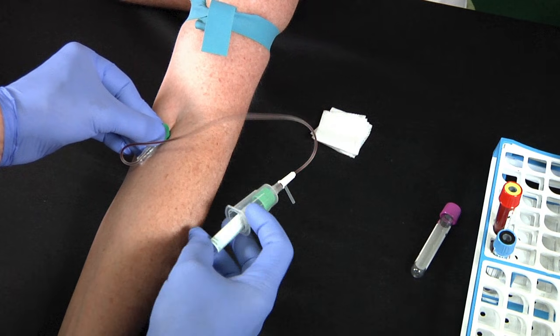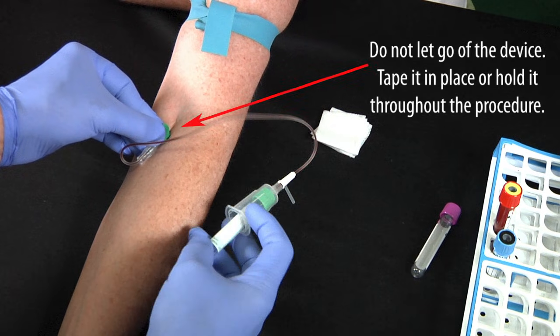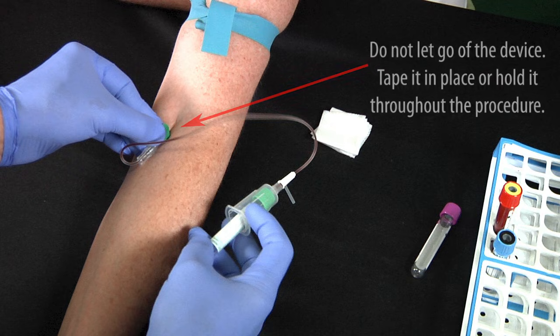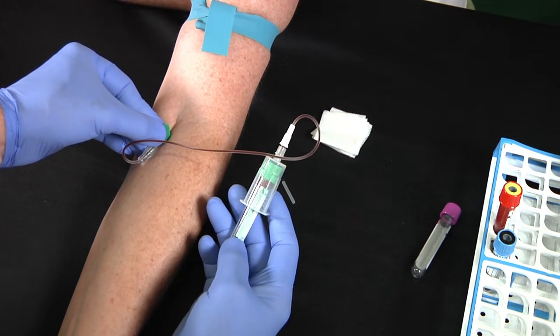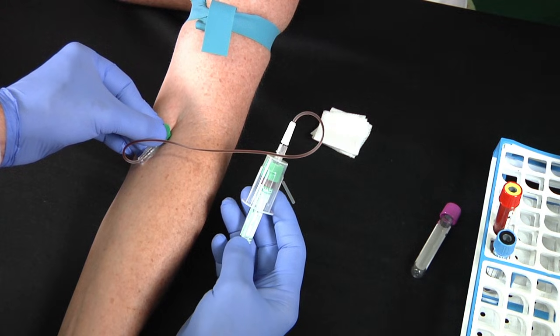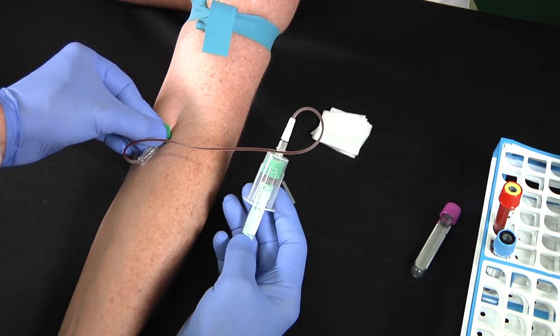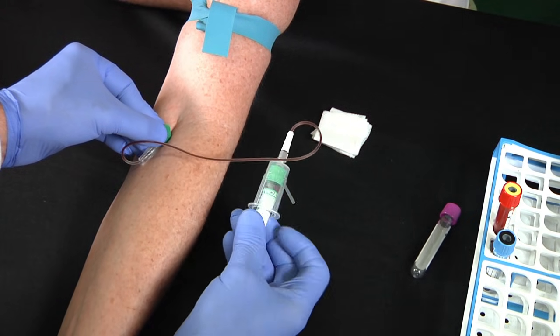Okay, this is important. The standards require you to keep the butterfly set secured by either holding it in place throughout the procedure or taping it down. You can't let go and expect it to stay in place, so I'm going to hold it in place rather than tape it. Once you have blood flow, you can release the tourniquet as long as you have a good vein. But if it's a tricky or fragile vein and you think the flow will stop, you should probably keep it in place.